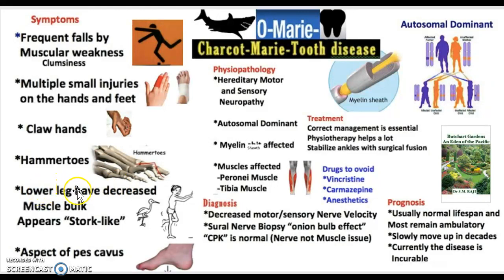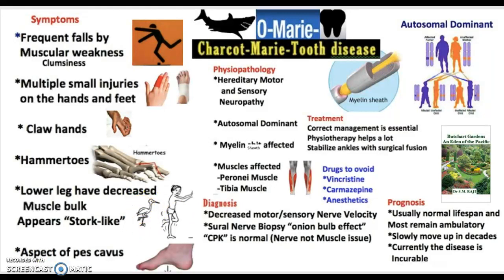The lower leg muscles decrease while the upper body appears to bulk, giving a stork-like appearance. If you look here, the legs have really started to shrink while the upper body bulks up, just like a stork. The last symptom is pes cavus — if you look here, this is a perfect example in a grown man's foot. There's a little arc that indicates the presence of pes cavus.